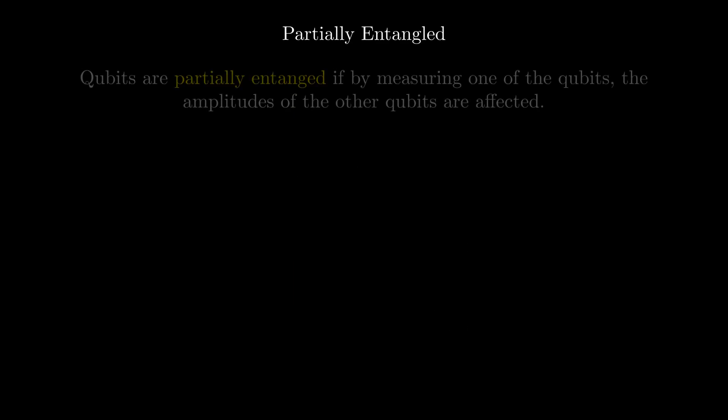We say qubits are partially entangled if the measurement of a qubit affects the probabilities or phase of the other qubits. For example, with this state,